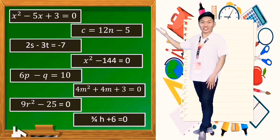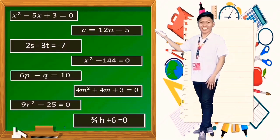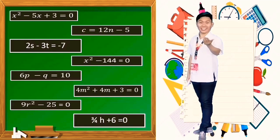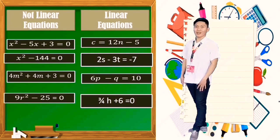Which of the following equations are not linear? Why? How does this equation differ from that of linear equations? Very good!